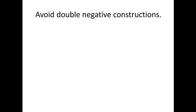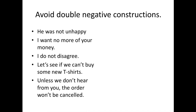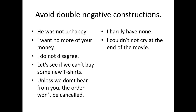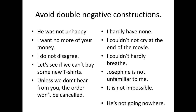Another strategy when writing for diverse audiences is to avoid double negative constructions. For example: 'He was not unhappy.' 'I want no more of your money.' 'I do not disagree.' 'Let's see if we can't buy some new t-shirts.' 'Unless we don't hear from you, the order won't be canceled.' 'I hardly have none.' 'I couldn't not cry at the end of the movie.' 'I couldn't hardly breathe.' 'Josephine is not unfamiliar to me and it is not impossible.' These are confusing and they're not necessary. So when writing for any audience, but particularly diverse audiences, avoid these kinds of constructions. And one more: 'He's not going nowhere' — I still don't know exactly what that means.